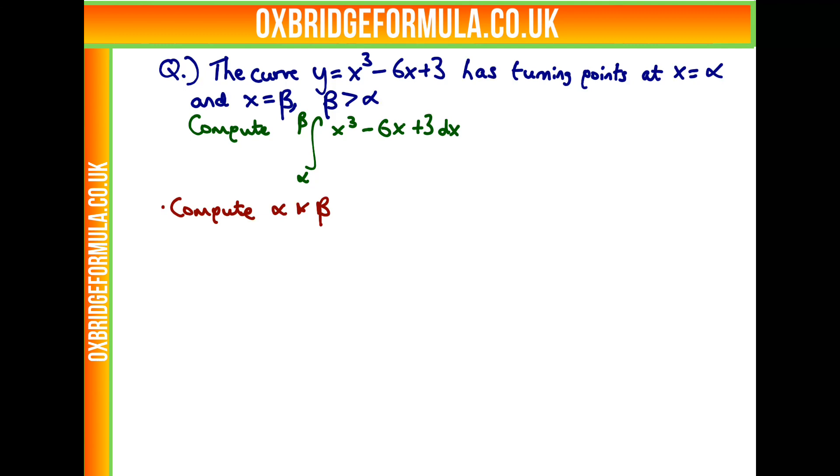Because they're turning points, alpha and beta must satisfy that the derivative of the curve is 0, which is when 3x squared minus 6, which is the derivative of y, is equal to 0. This occurs exactly when 3x squared is equal to 6.